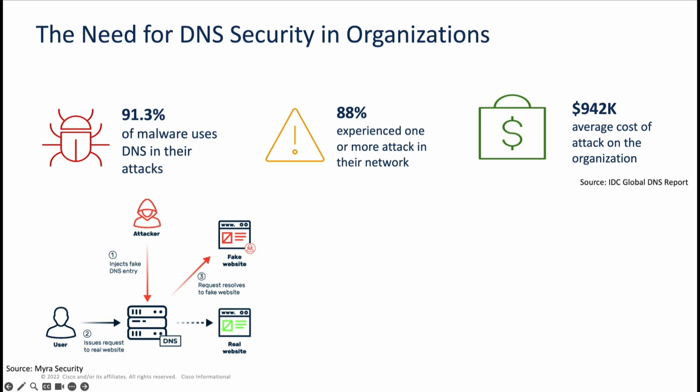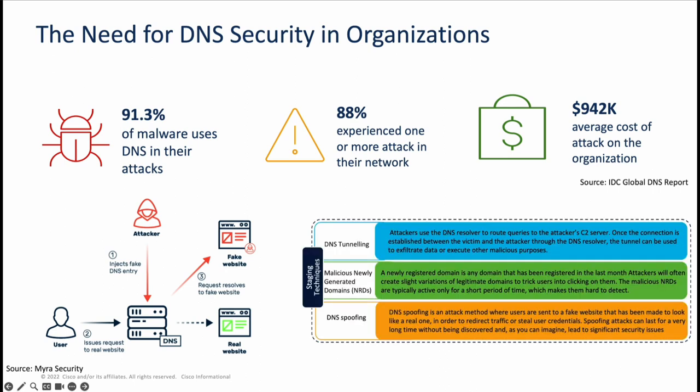Let's take a look at some of the staging techniques used within these attacks. We have DNS tunneling, malicious newly generated domains, and DNS spoofing. With the data shown, it's very necessary for organizations to monitor and analyze their DNS traffic. And that's where Cisco Umbrella comes into play, providing a security solution to monitor, detect, and also secure the DNS layer of your network.